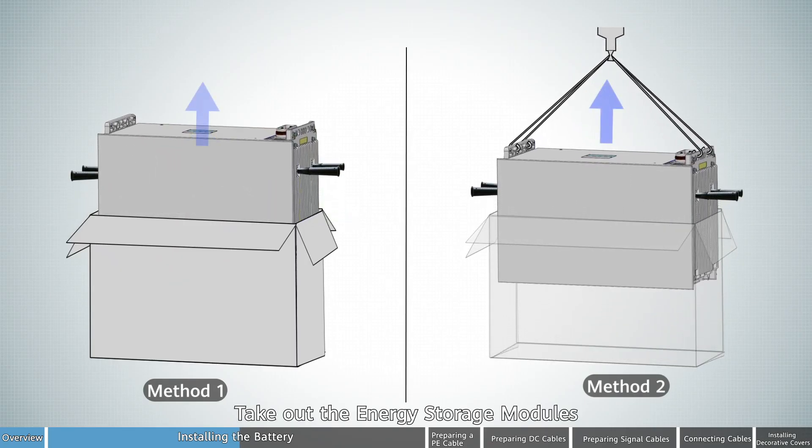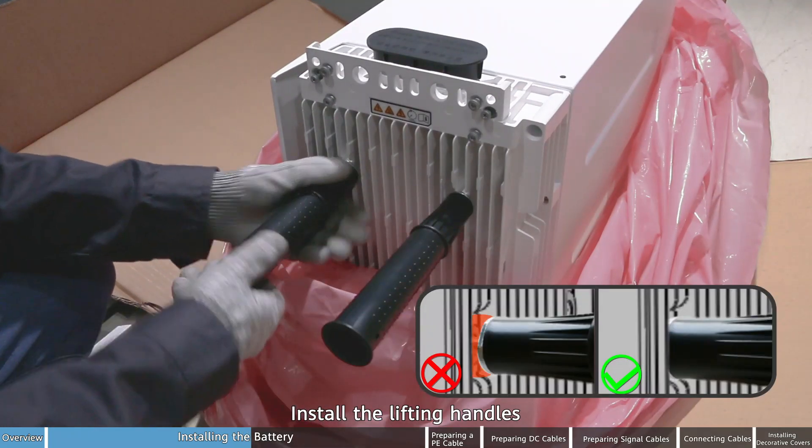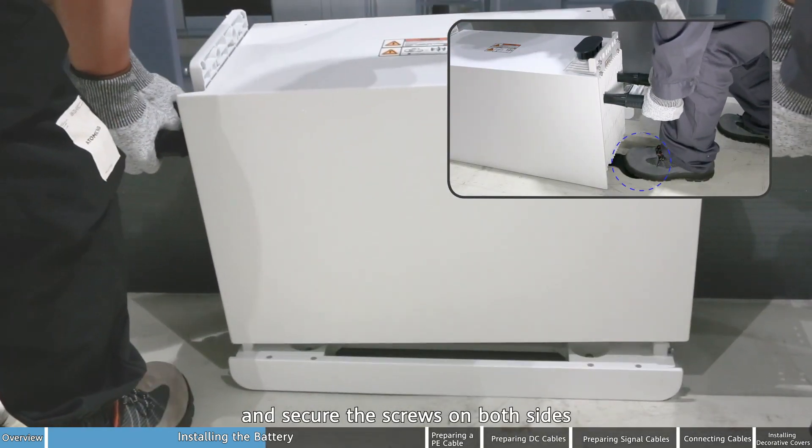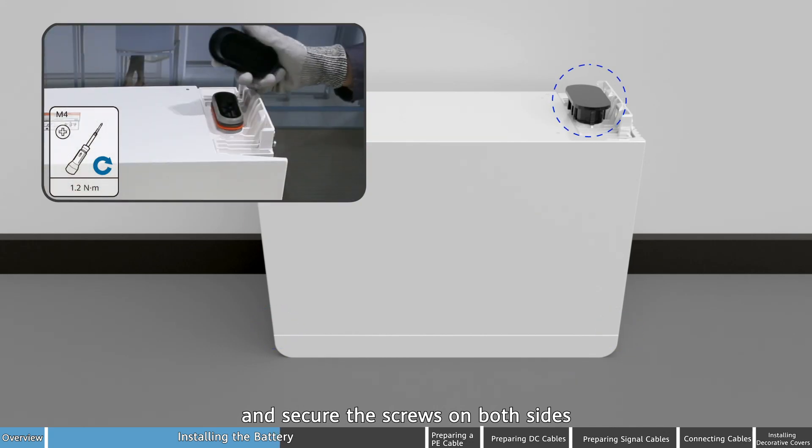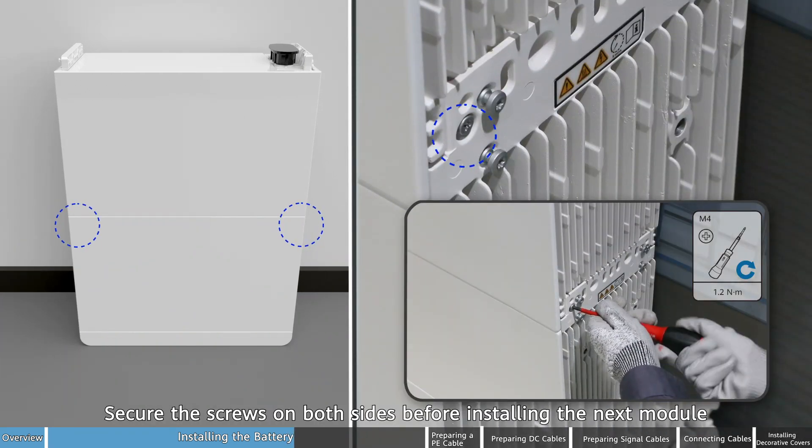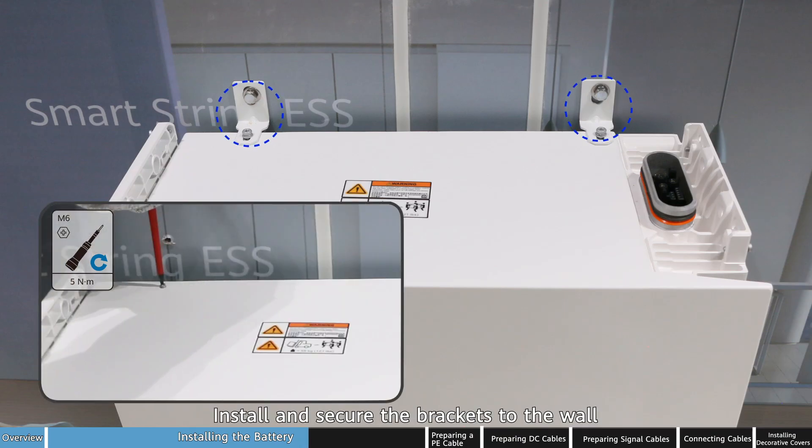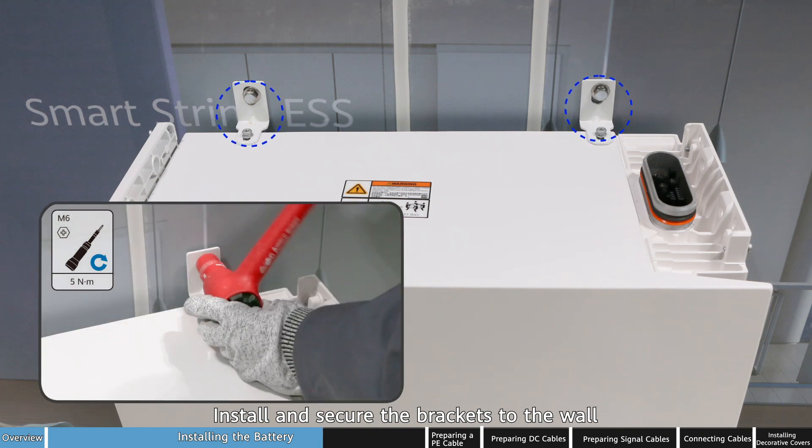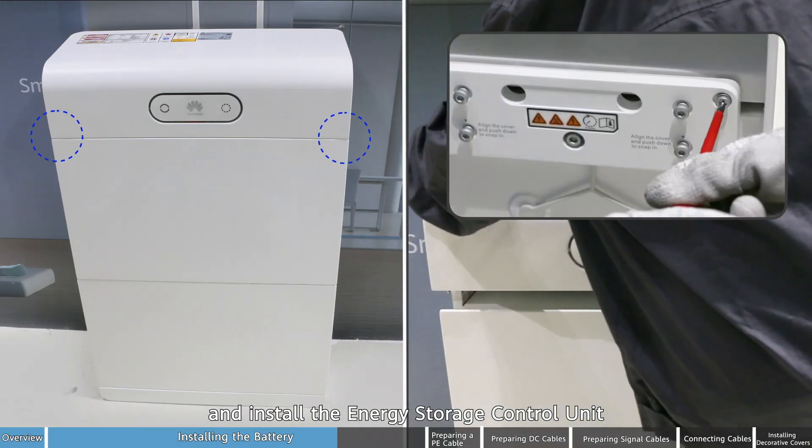Take out the energy storage modules. Install the lifting handles. Install the first energy storage module and secure the screws on both sides. Install the remaining energy storage modules in sequence. Secure the screws on both sides before installing the next module. Install and secure the brackets to the wall and install the energy storage control unit.